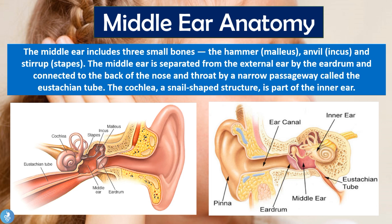The middle ear is actually separated from the external ear by the eardrum and is connected to the back of the nose and throat by a narrow passageway called the eustachian tube. So this is actually the eardrum here, this is part of the external ear, and then we have the internal ear which begins here — and this is that eustachian tube that connects to the back of the nose and throat. The cochlea, which is a snail-shaped structure, is part of the inner ear, and this is what the cochlea looks like.